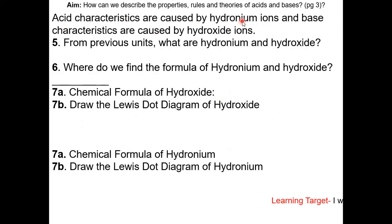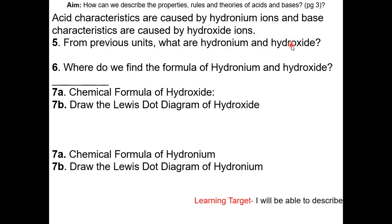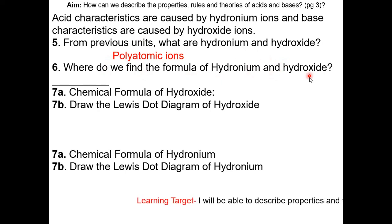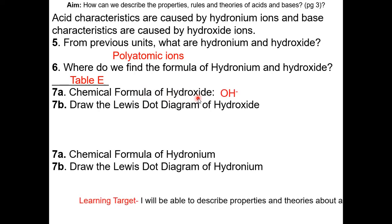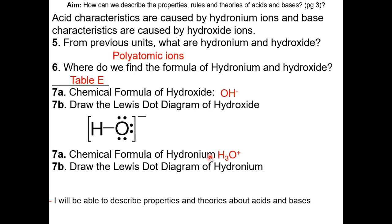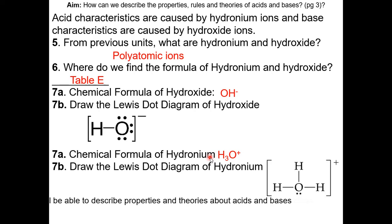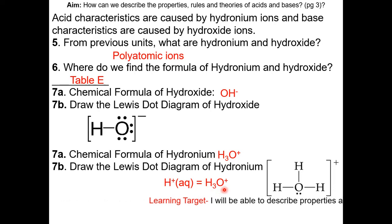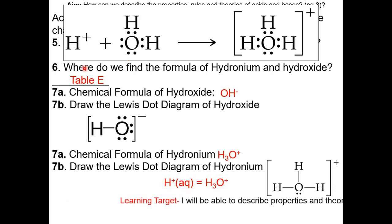Acid characteristics are caused by hydronium ions and base characteristics are caused by hydroxide ions. From the previous units, what are hydronium and hydroxide? They are polyatomic ions. Where do we find the formula of hydronium and hydroxide? Table E. The chemical formula of hydroxide is OH⁻. The chemical formula of hydronium is H3O⁺. Hydronium can also be written as H⁺(aq) because when a hydrogen ion combines with a water molecule, you get the hydronium ion.